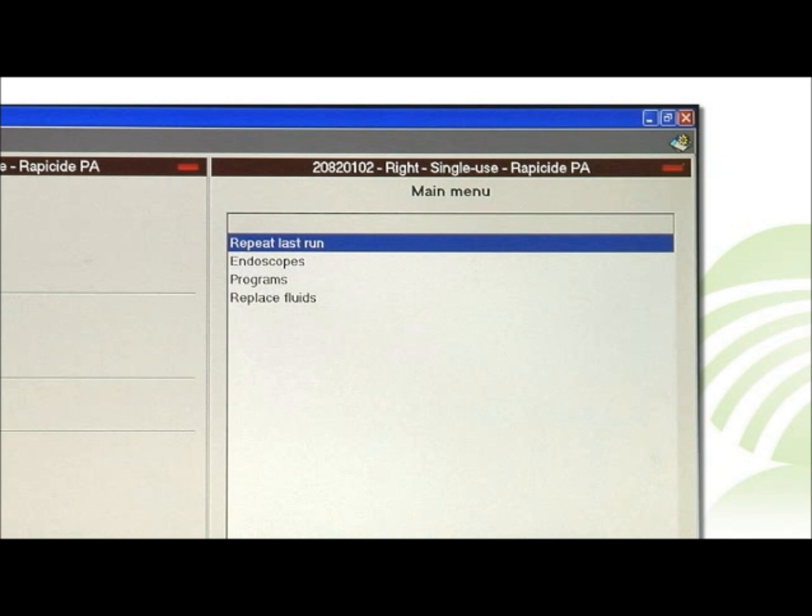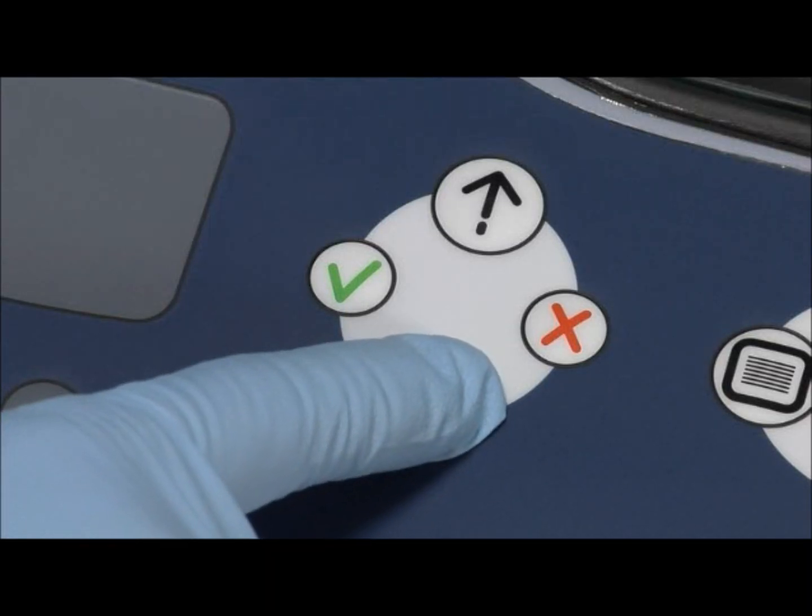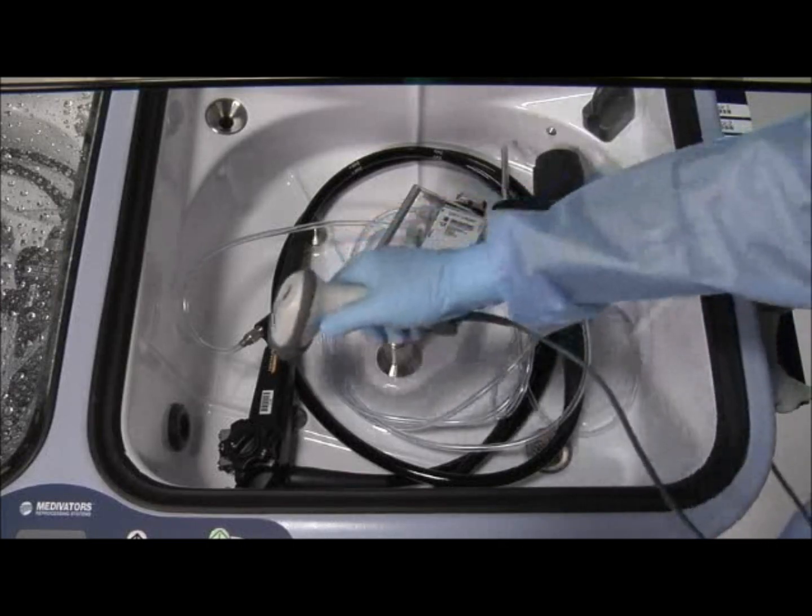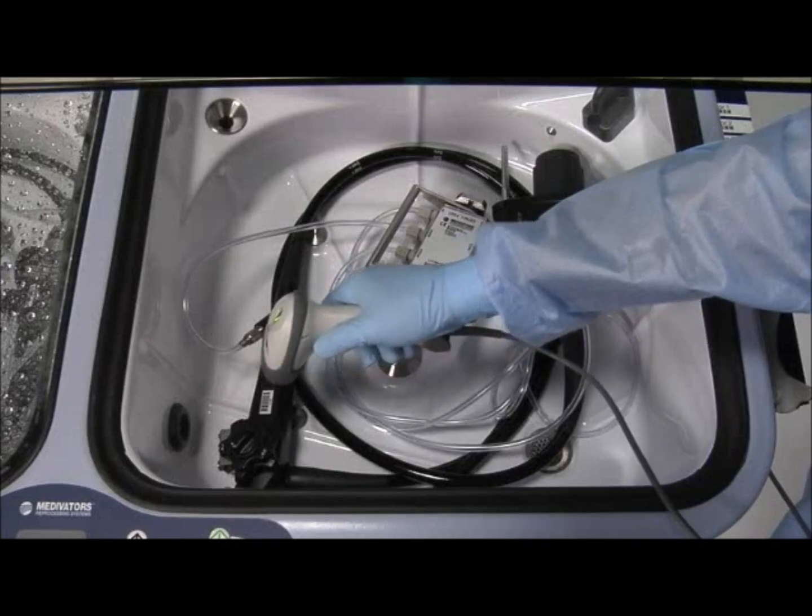The program selection window opens. Use the scroll down button to highlight endoscope selection and press enter. Use the barcode scanner to scan the barcode found on the endoscope.